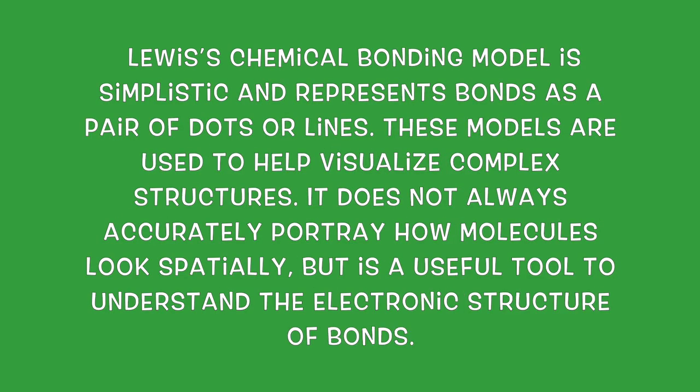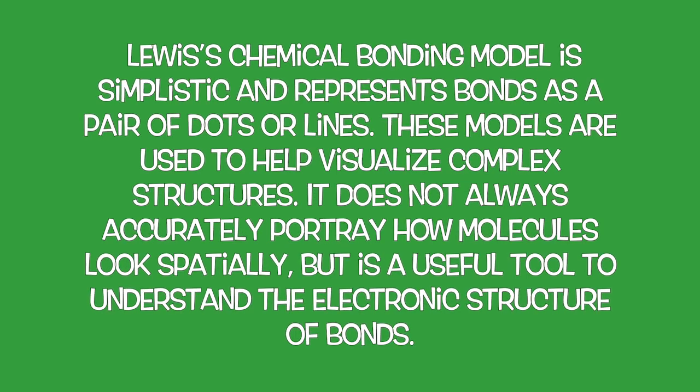Lewis' chemical bonding model is simplistic and represents bonds as a pair of dots or lines. These models are used to help visualize complex structures. It does not always accurately portray how molecules look spatially, but it is a useful tool to understand the electronic structure of bonds.